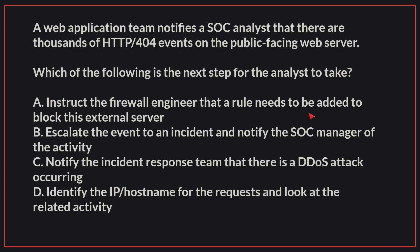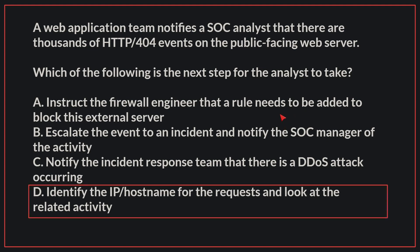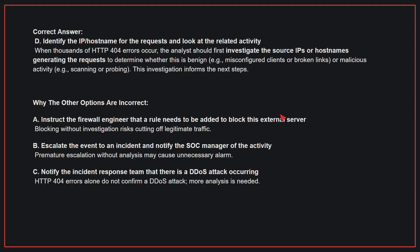A web application team notifies a SOC analyst that there are thousands of HTTP 404 events on the public-facing web server. Which of the following is the next step for the analyst to take? The correct answer is D: identify the IP host name for the requests and look at the related activity. When thousands of HTTP 404 errors occur, the analyst should first investigate the source IPs or host names generating the requests to determine whether this is benign or malicious activity. This investigation informs the next steps.